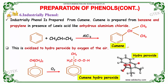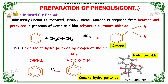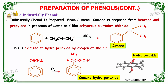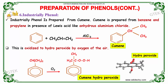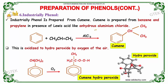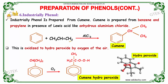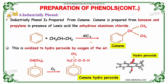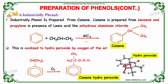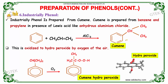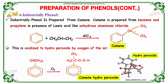Industrially, phenol is prepared from cumene. Cumene is prepared from benzene and propylene in the presence of a Lewis acid like anhydrous aluminum chloride (AlCl₃). Benzene reacts with propylene in the presence of AlCl₃ to give cumene, where –CH(CH₃)₂ is an additional substituent on the benzene ring.